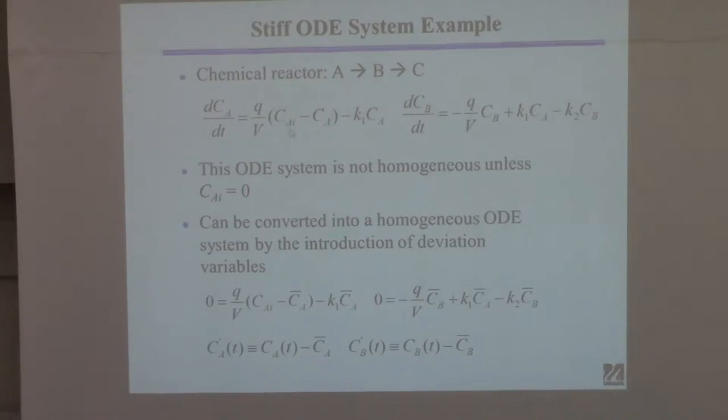It's non-homogeneous, right? This equation's homogeneous, but this one's not because of the CAI thing. That's not CA or CB. That makes it non-homogeneous. So you know the trick. I taught you the trick. Because CA is a constant, you can convert it into a homogeneous differential equation system by introducing these so-called deviation variables. First thing you do is you set the derivatives equal to zero, and then you find the steady-state values of CA and CB. We've done this three or four times now.